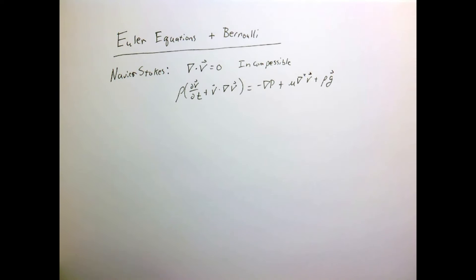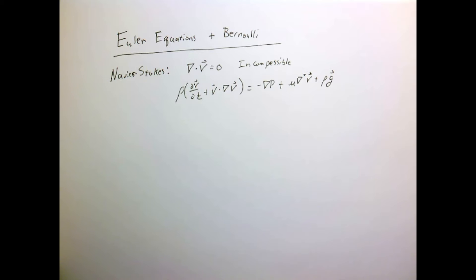Today we're going to discuss Euler equations and the Bernoulli equation. We've seen previously that we know what the Navier-Stokes equations are, which are conservation of mass and momentum for an incompressible flow. Let's look at a restricted form of this and make two assumptions.